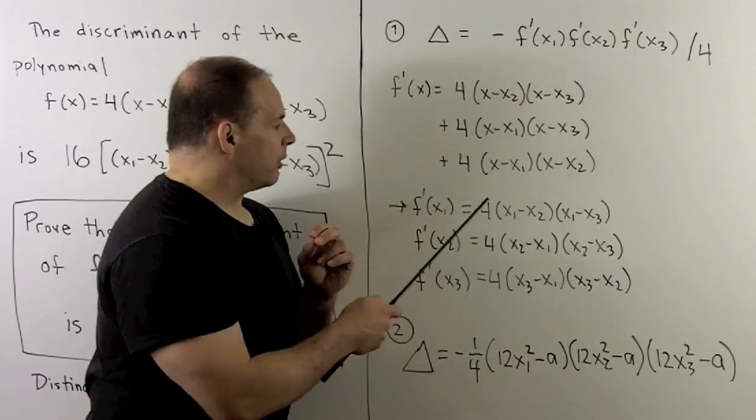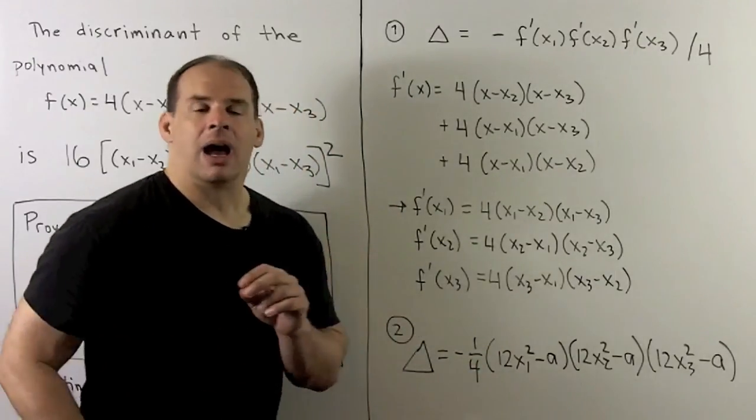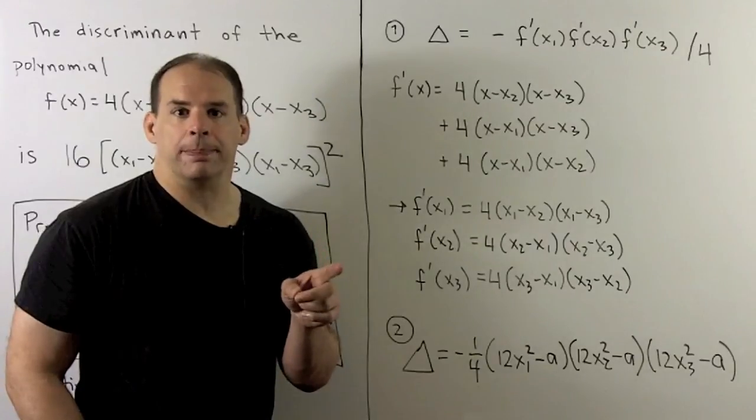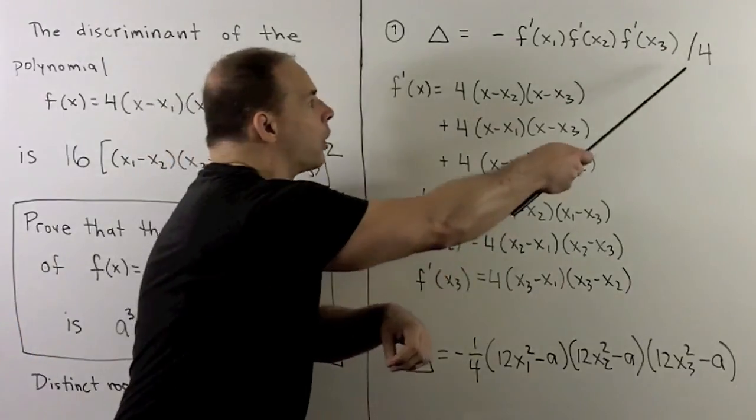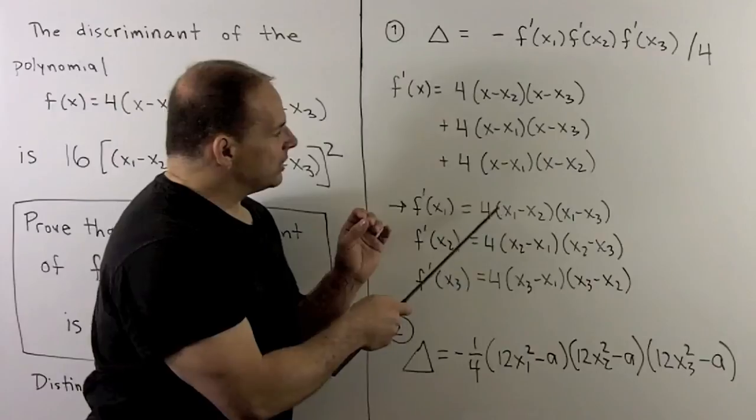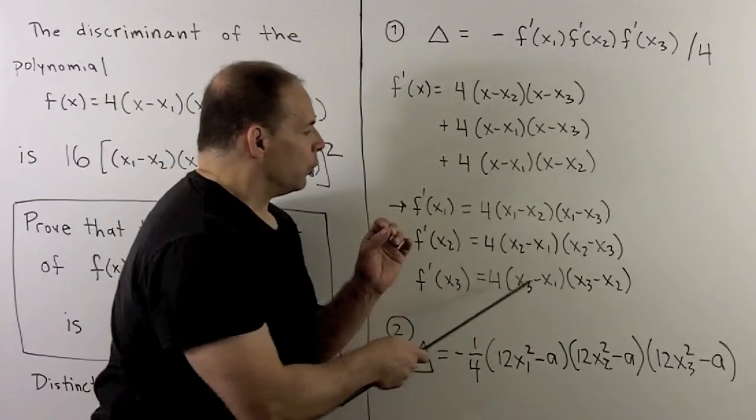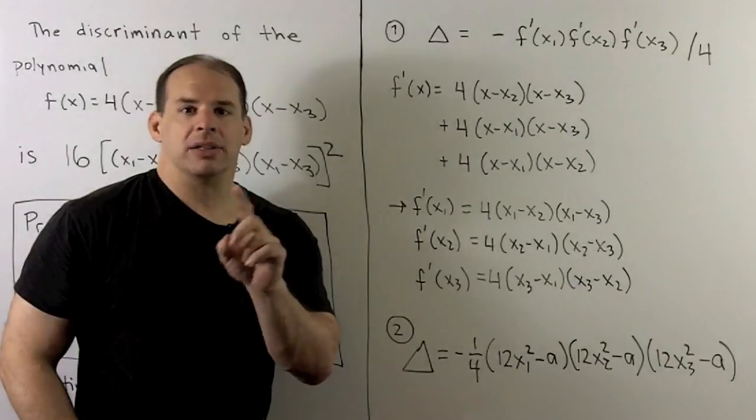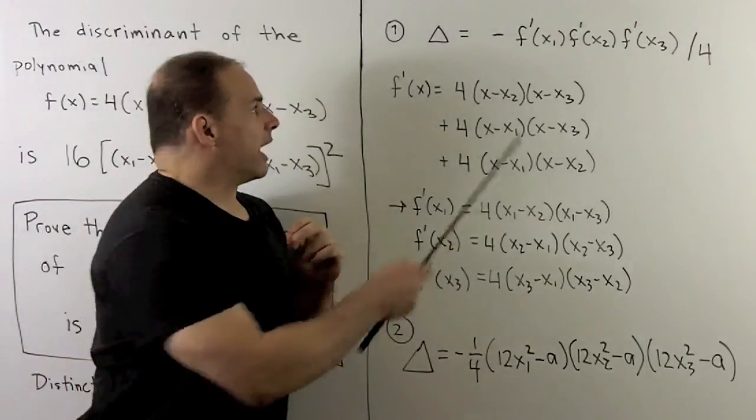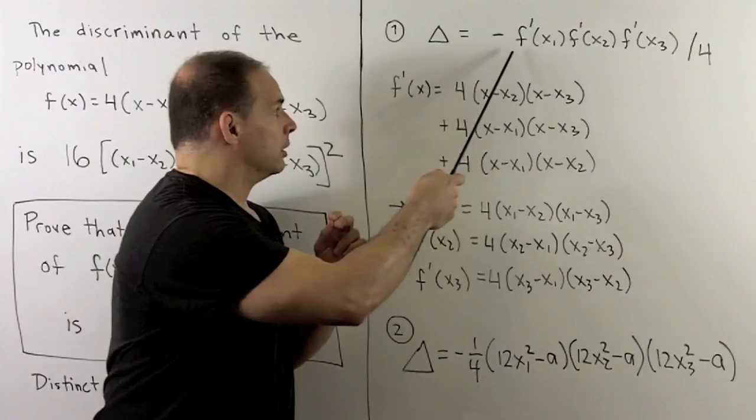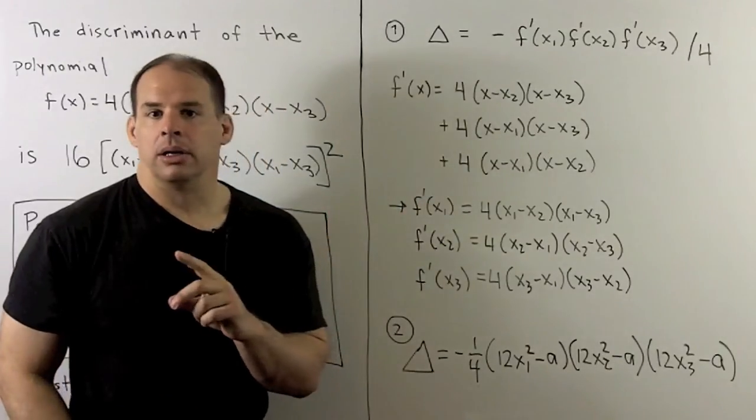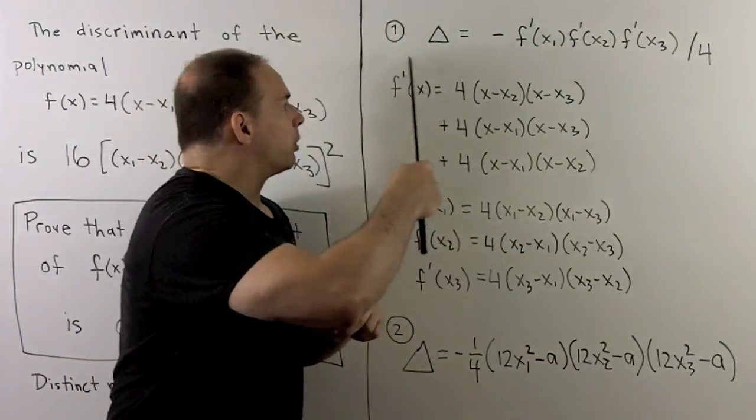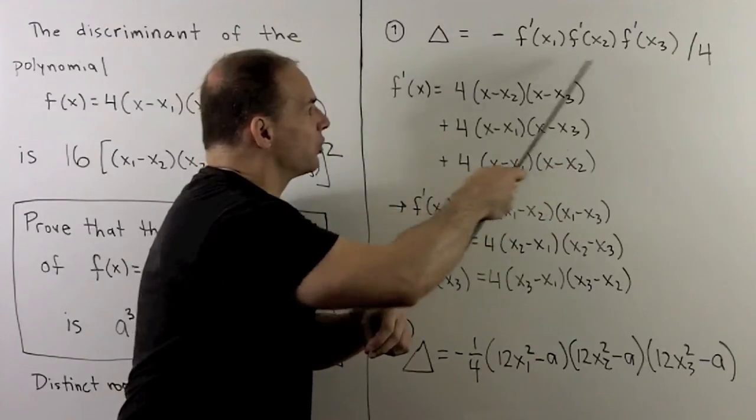Things to note: we have four times four times four. I want a 16 out in front of the discriminant, so I'll divide by a four. And if we take all the products here, we notice we're going to pick up, to get things in the right order, minus one times minus one times minus one, so I need a minus one out in front also. That gives us the general expression of the discriminant in terms of the derivative.